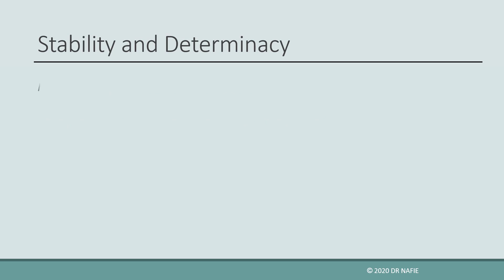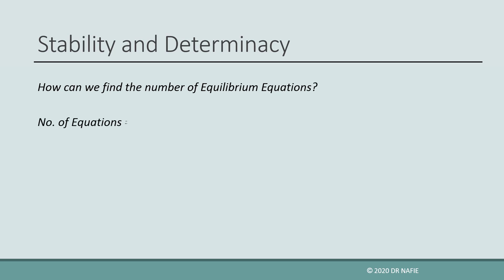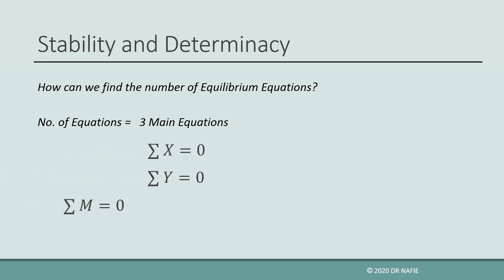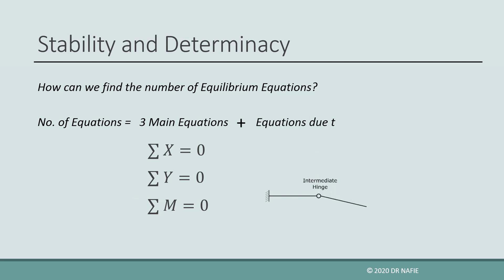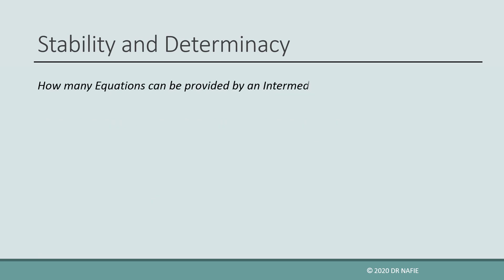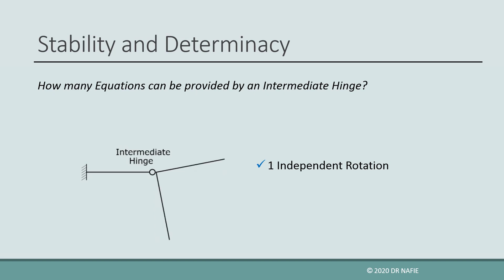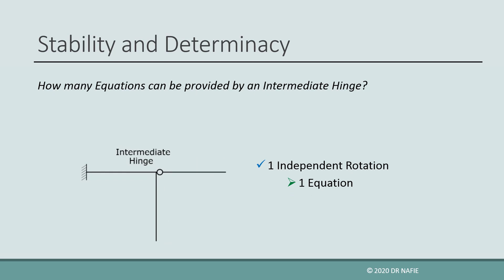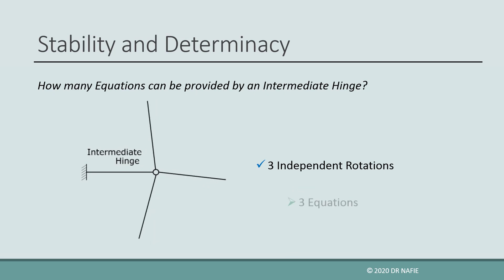To solve for the unknown forces, equilibrium equations must be generated by balancing the acting forces and the reactions. Equilibrium equations consist of the three main equilibrium equations — sigma x, sigma y, and sigma m — and equilibrium equations caused by the presence of intermediate hinges. The number of equilibrium equations generated by a hinge is equal to the number of independent constant rotations that can happen around the hinge after clamping one of the surrounding elements.